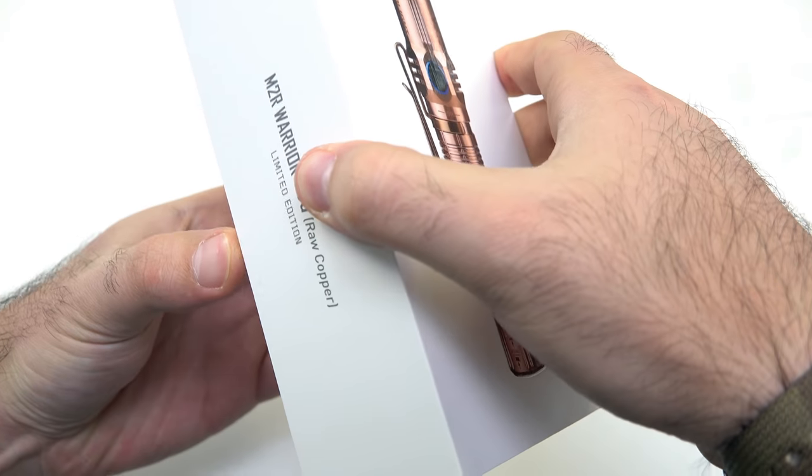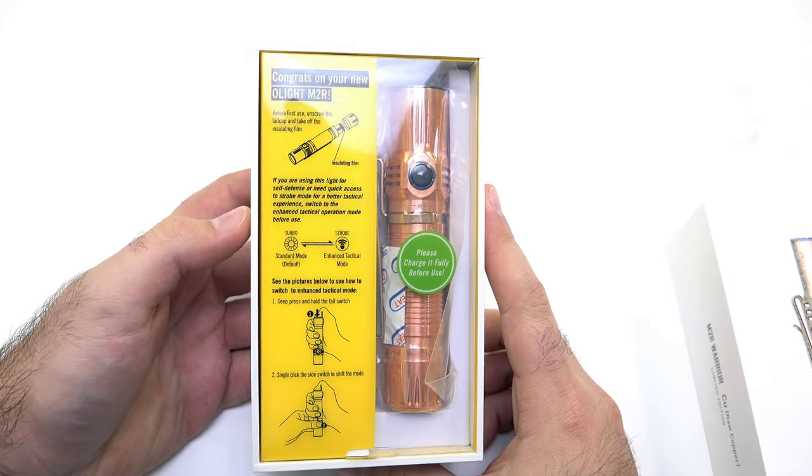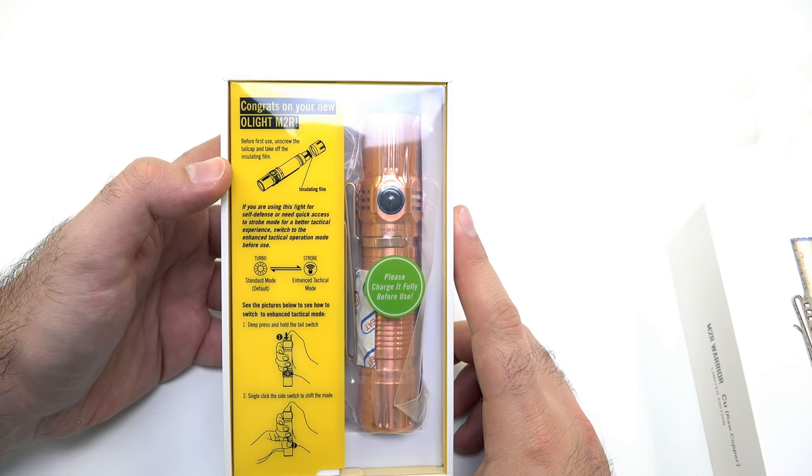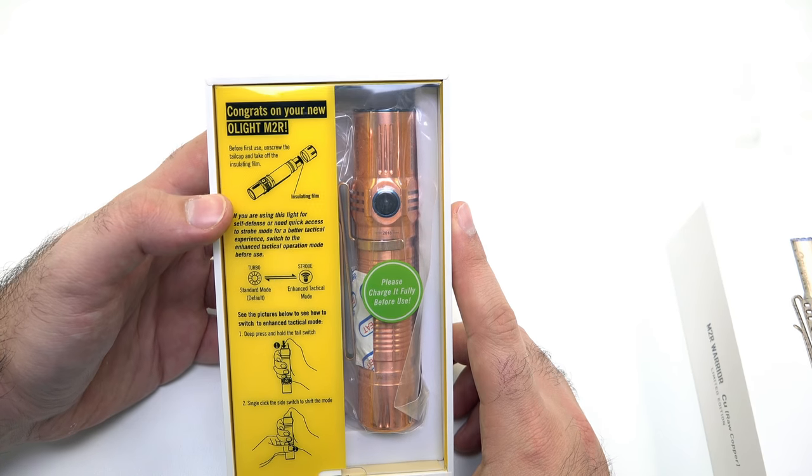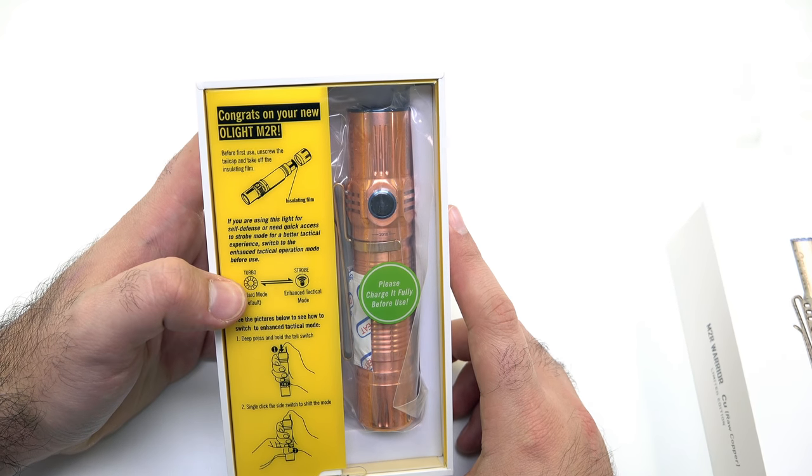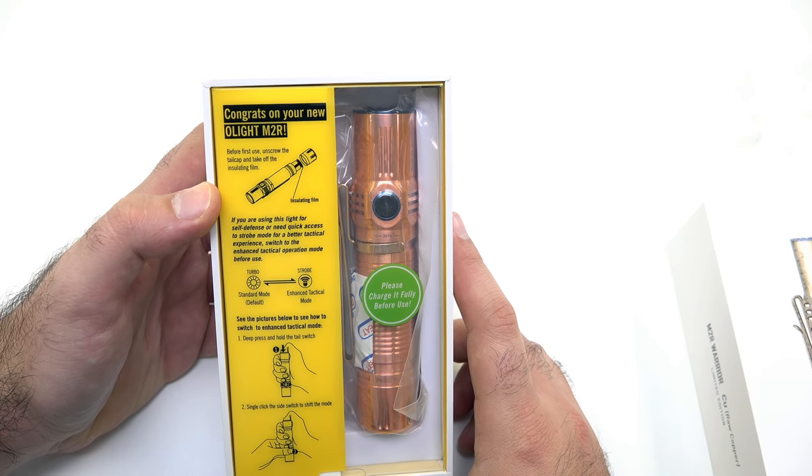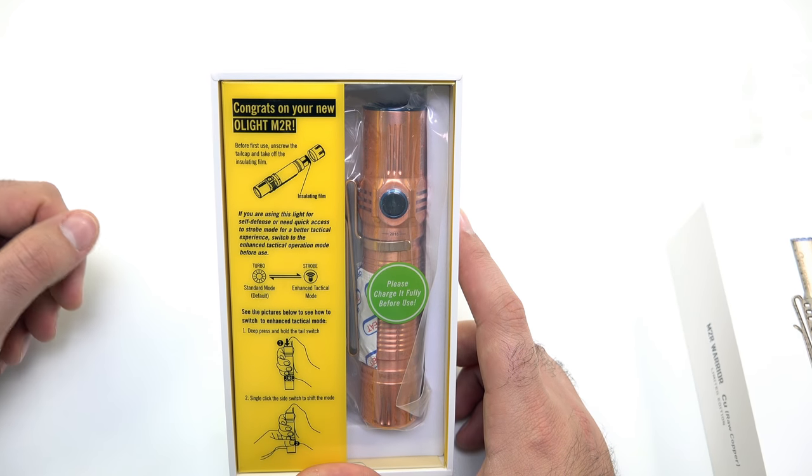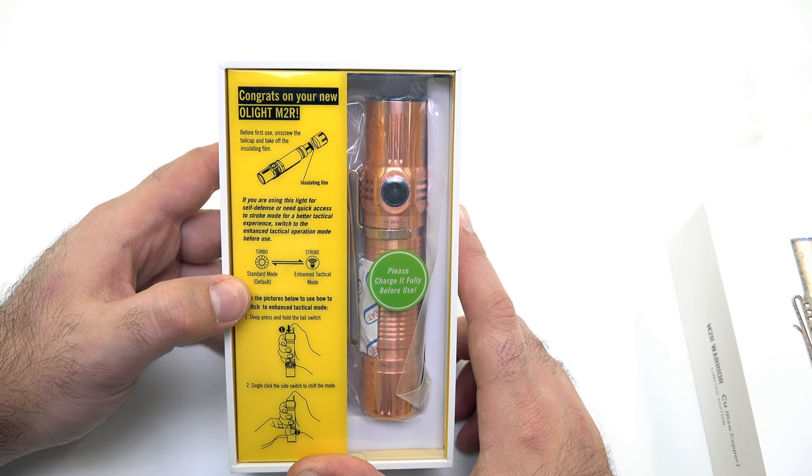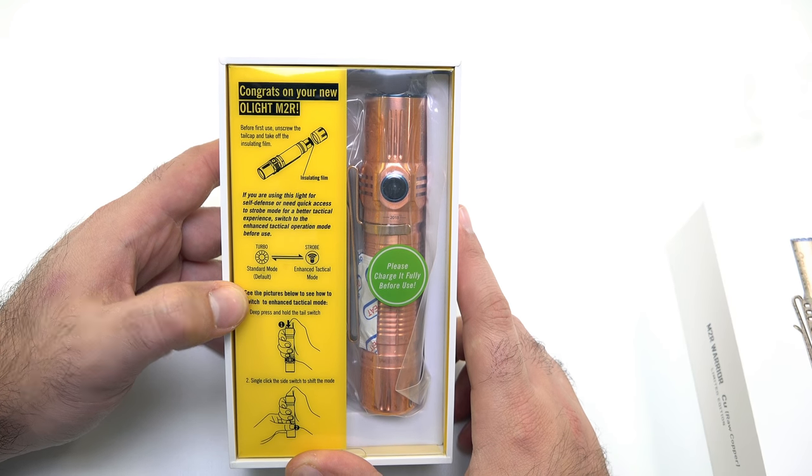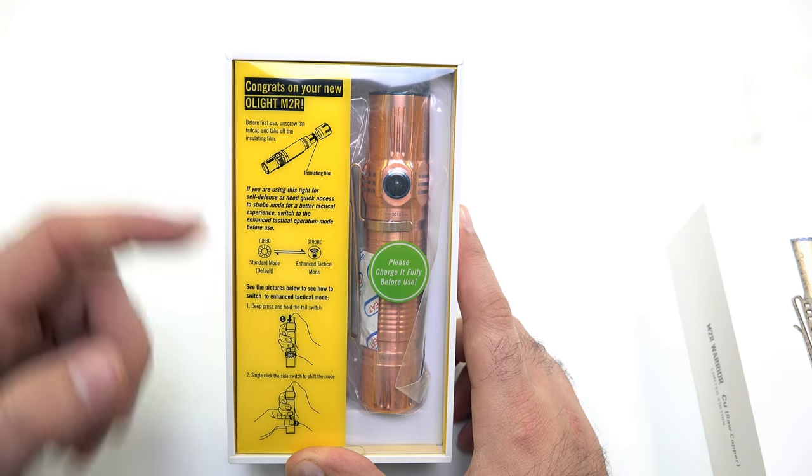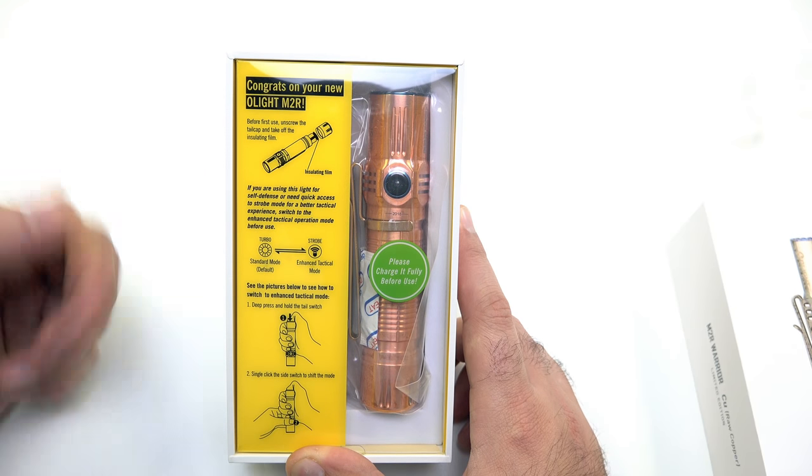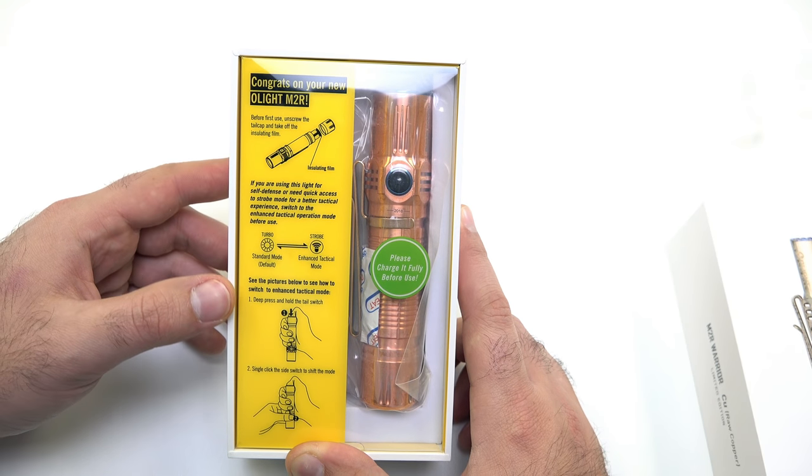You can see here there's some disclaimers here on the side. First of all, it's telling you to remove the insulating film from the tail cap because that is blocking the flashlight from having a connection with the battery. There are two different types of modes: the standard default mode and the enhanced tactical mode that includes strobe. We can switch between those two and we'll talk about that a little bit later.